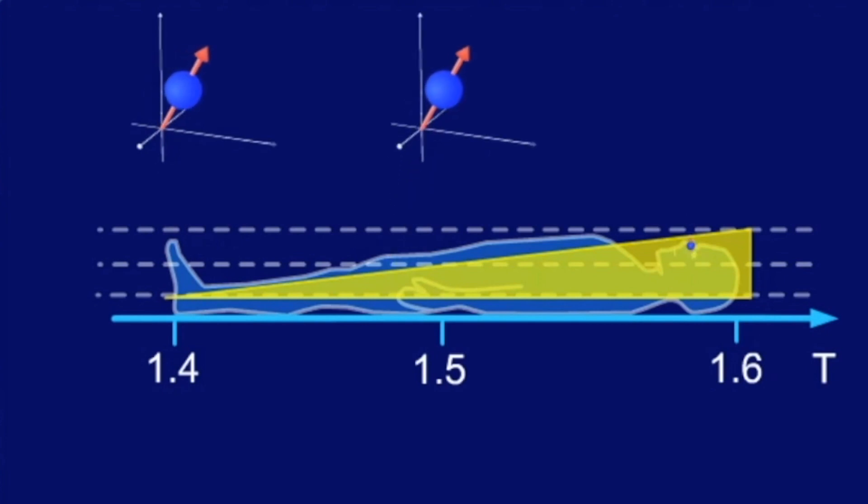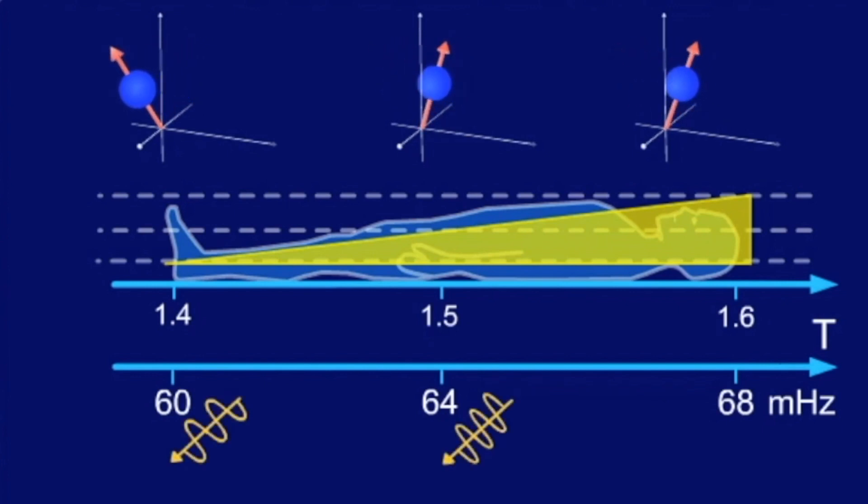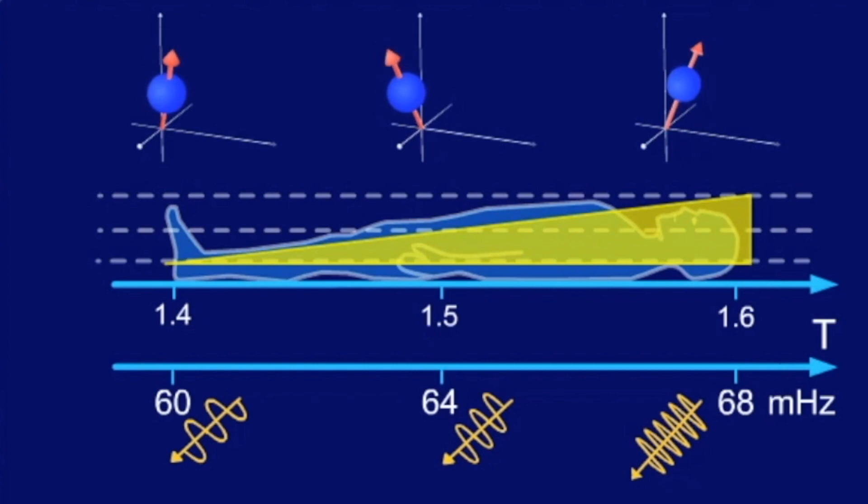Consequently, the protons in the different slices experience different magnetic fields, and thus have different precession frequencies. So the RF pulses which disturb the protons in the different slices must have different frequencies as well.